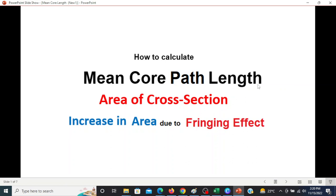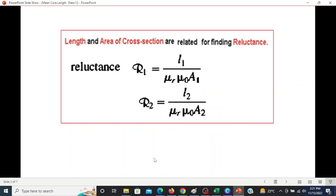Mean core path length, area of cross-section, increase in area due to fringing effect from magnetic circuit. In the formula for reluctance, we can look at length L1 to area A1.